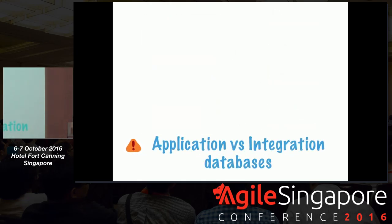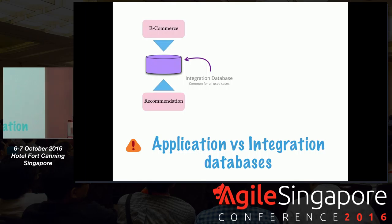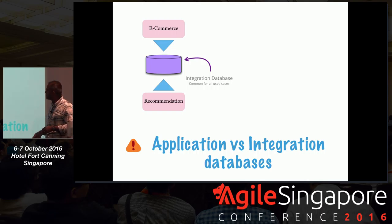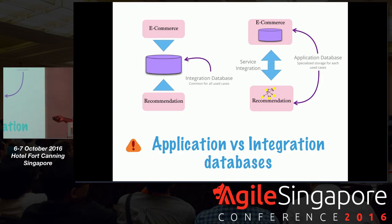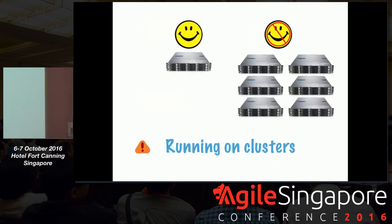There's the notion of application versus database integration — everything is dumped into a database and applications read from it. This is a big integration database and changing anything is super hard. We've moved to a different way now, where integration happens at a service layer instead of at a data layer. If your app needs something, it asks the other app directly. This frees you up to decide what's good for your app — your app may be better off using a graph database versus a relational database.